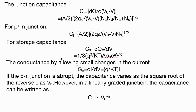The storage capacitance C_s is dQ/dV = 1/3 Q²/KT * A*P_n*e^(QV/KT). Conductance by allowing small changes in the current, G_s = dI/dV.